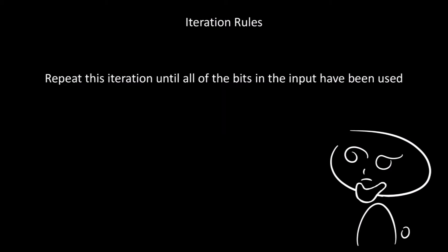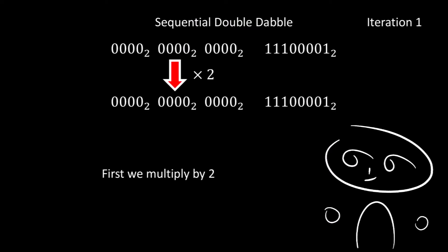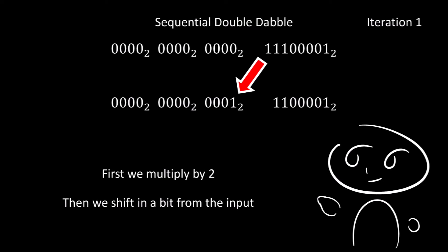Then we repeat this iteration until all of the bits of the input have been used. So to start with, the output, which is our BCD values on the left, they will be equal to zero. Then the input on the right will be equal to the binary for 225. So for the first iteration, we start by multiplying by 2. So 0 multiplied by 2 equals 0. Then we shift in the topmost bit from our input. This bit happens to be a 1, so the bottommost digit becomes a 1.